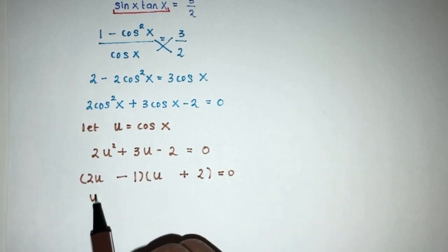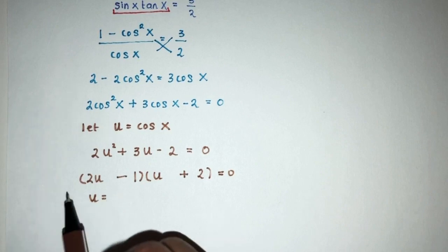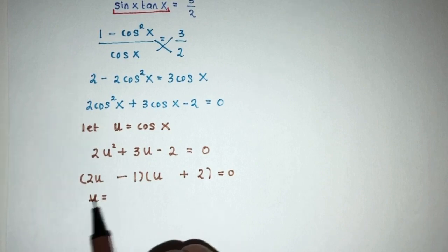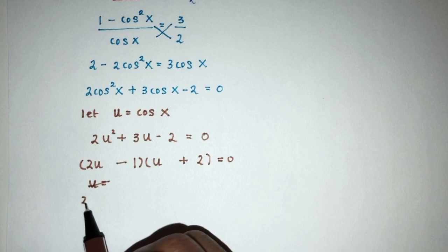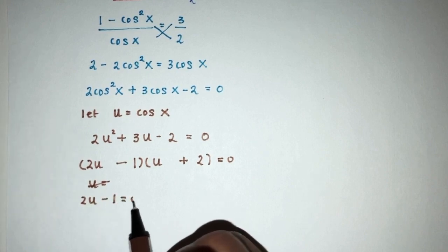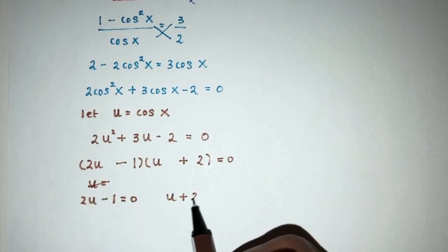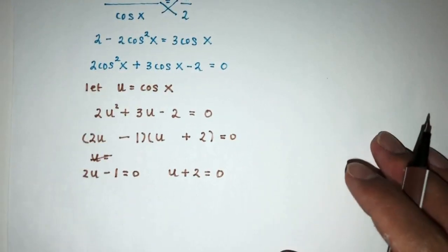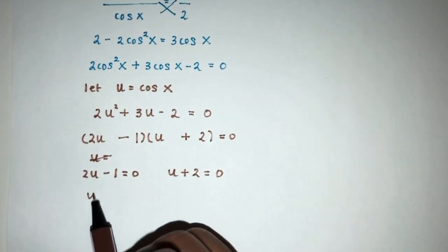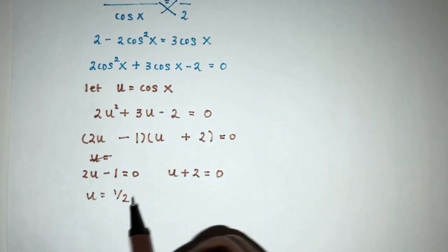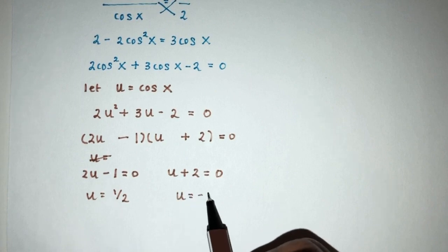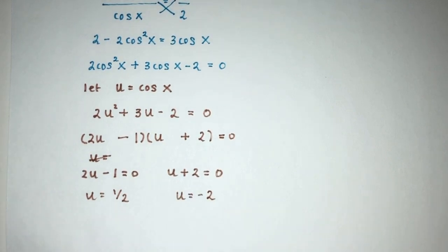So solving, u here will become, so here we have, sorry, let me simplify this for you first. You will have 2u minus 1 will be 0. Here we have u plus 2 will be 0. So the first value will be u is equal to half, and u will be minus 2. So here we have 2 values for u.